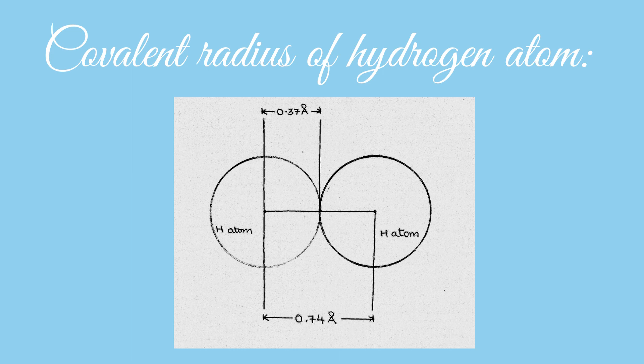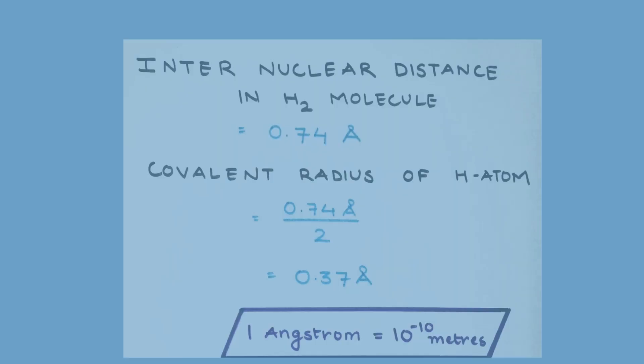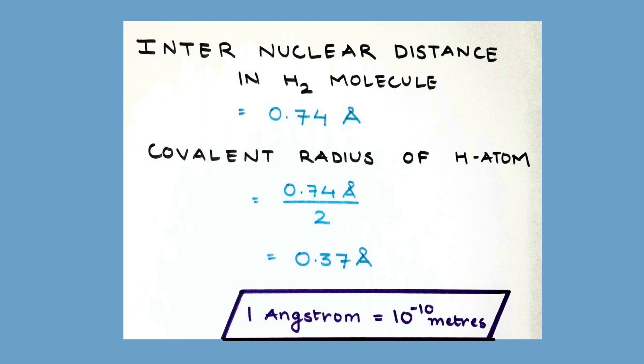We are very clearly able to see in the diagram that the internuclear distance in H2 molecule is 0.74 angstrom. Hence, the covalent radius of hydrogen atom will be 0.74 angstrom divided by 2, which is 0.37 angstrom. Also remember, 1 angstrom equals to 10 raised to the power minus 10 meters.